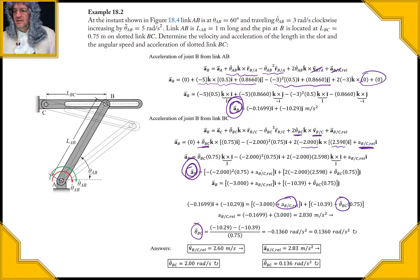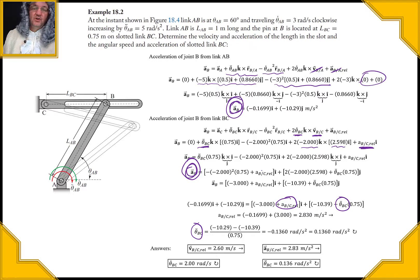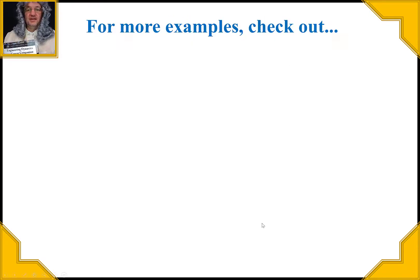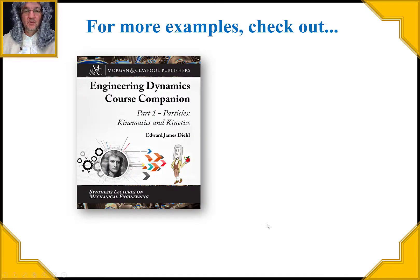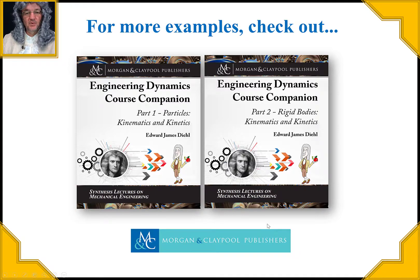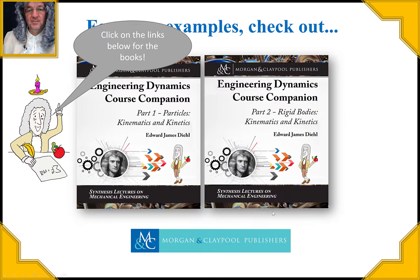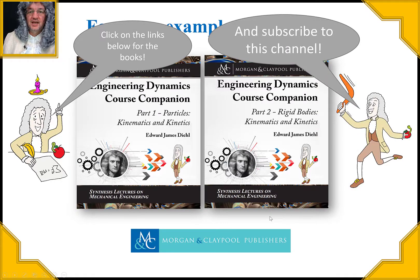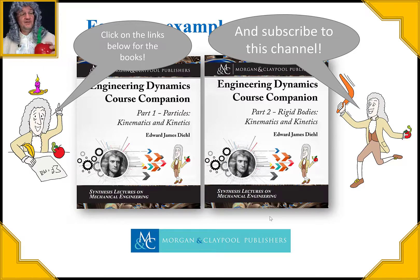I also did this problem in the book using polar notation and vector loops, just to show another approach. There's also an inverted slider crank example in there. For more examples, check out the Engineering Dynamics Course Companion — a two-volume set published by Morgan and Claypool. Links are in the description, or search on Amazon. Please subscribe to the channel and leave feedback in the comments. Thank you and have a great dynamic day!